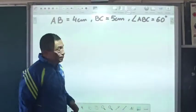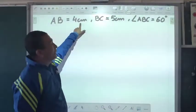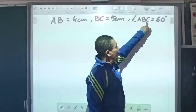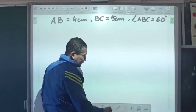Let's take an example here. I've got AB equals 4 cm, BC as 5 cm, and angle ABC as 60 degrees.